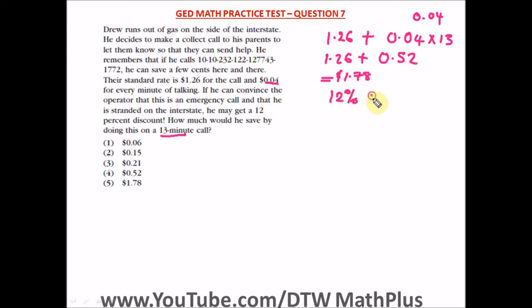So we have 12% of $1.78, that's 12 over 100 times $1.78. When you punch in your calculator, you're going to get $0.2136.